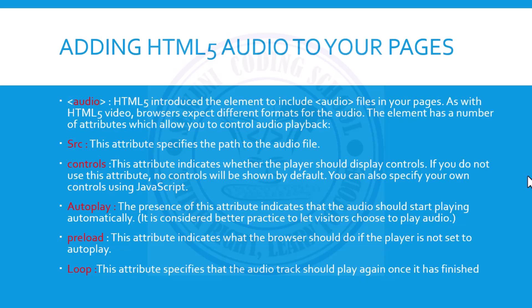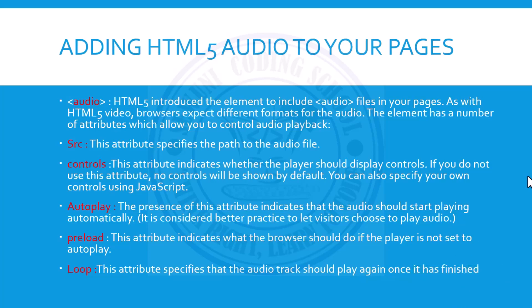Autoplay indicates that the audio should start playing automatically. The preload attribute indicates what the browser should do if the player is set to autoplay — we explained that in the video. Preload also has values of either none, metadata, or auto. There is also a loop attribute, which specifies that the audio track should play again once it is finished.